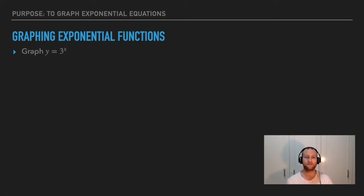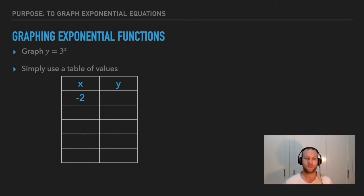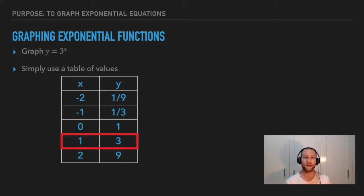Let's graph y equals three to the power of x using a table of values. For x equals negative two, y equals one over nine. For x equals negative one, y equals one over three. For x equals zero, y equals one. For x equals one, y equals three. Notice that when x equals one, y equals three — the same as the base in the equation. Take note of that.